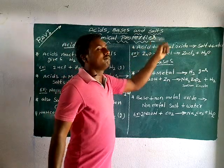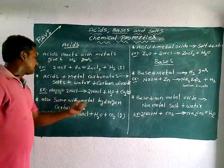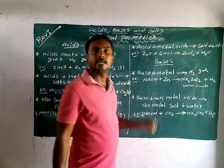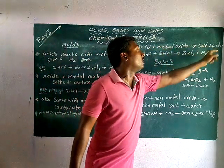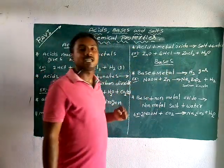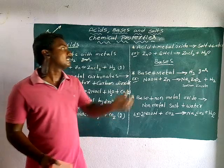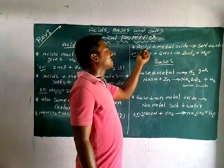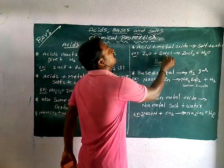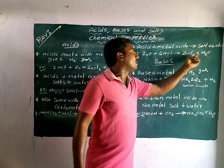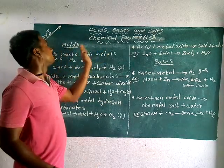The fourth property: acids react with metal oxides and give rise to salt and water — the same as a neutralization reaction. Acid and base react to give salt and water. For example, hydrochloric acid reacts with zinc oxide to give zinc chloride and water. These are the four chemical properties of acids.